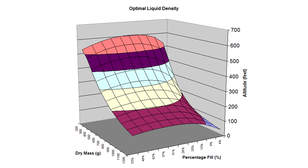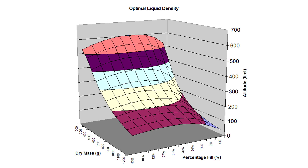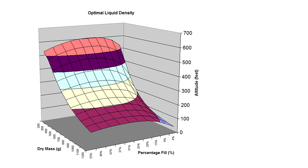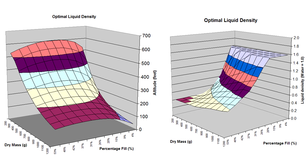Now we reran the simulations again, but this time for each point on the graph we let the simulator run another whole series of simulations that varied the density between 0.4 and 1.6. The simulator then found which density achieved the greatest altitude and also tells us what density would give us that optimal altitude. So we plot the optimal density in this second graph, which again has the dry rocket weight along this axis and the water fill percentage along this one, with the optimal density on the vertical axis.